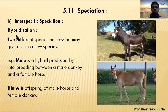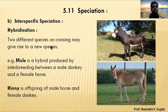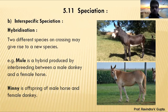An example of interspecific speciation is hybridization. Hybridization means crossing two different species. Two different species on crossing may give rise to a new species. When we cross two different species, we get an organism with new appearance and characters. This is called hybridization.